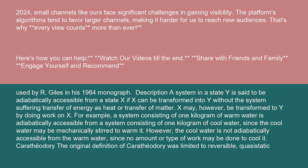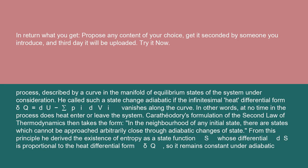Karathiodori: The original definition of Karathiodori was limited to reversible quasistatic process described by a curve in the manifold of equilibrium states of the system under consideration. He called such a state change adiabatic if the infinitesimal heat differential form delta Q equals dU minus sigma Pi dVi vanishes along the curve. In other words, at no time in the process does heat enter or leave the system.